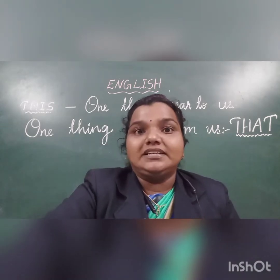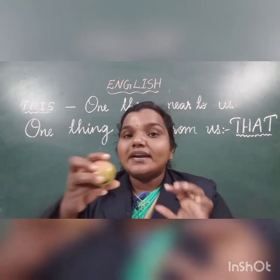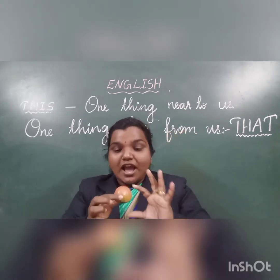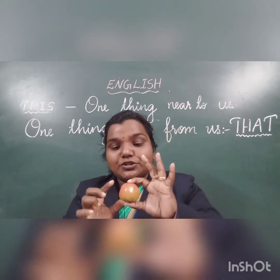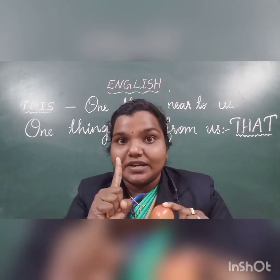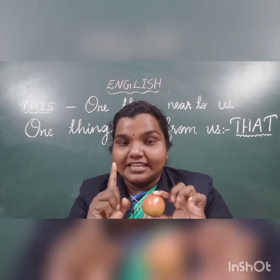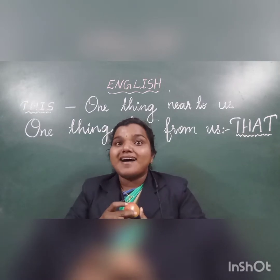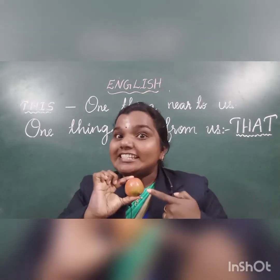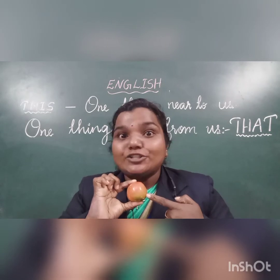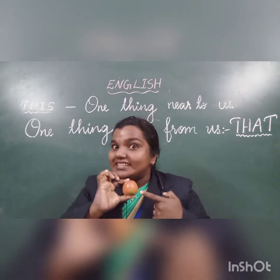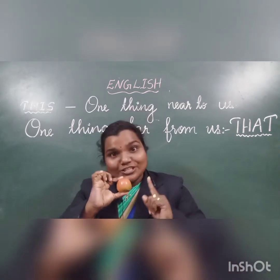The next example. What is this? This is a tomato. How many tomato? Only one. Singular. एक, हमारे पास. Near to us. So we will use THIS — This is a tomato.